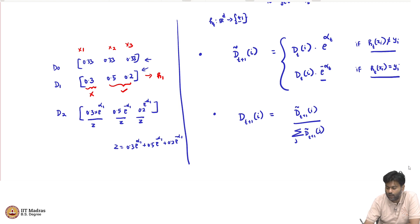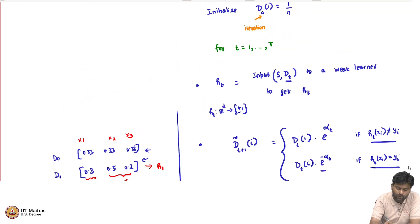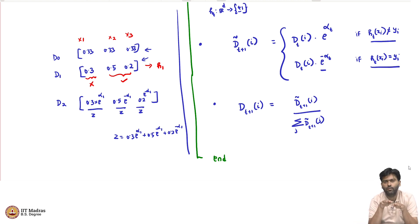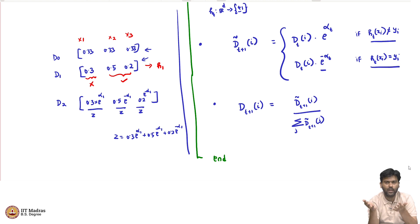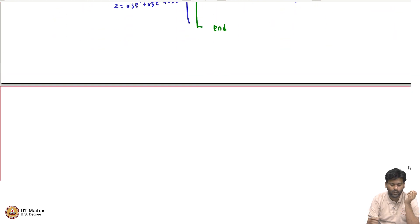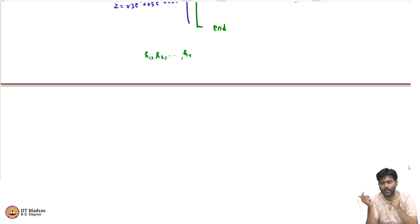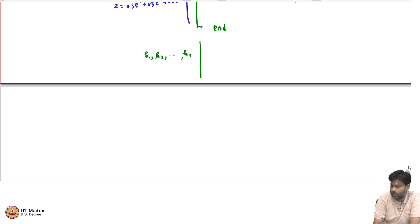You do this for T different rounds. What you have done is updated the weights so that you are correcting the mistakes of the previous classifiers at each round. At the end, you have h_1, h_2, ..., h_T — T different classifiers, all weak learners trained on different distributions over the data. The question is: how can we combine these T different learners to produce an aggregate classifier?